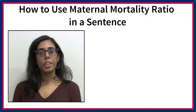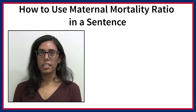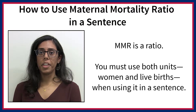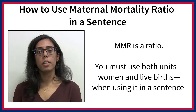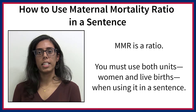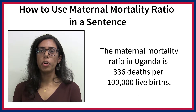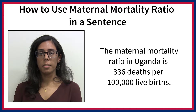How to use the maternal mortality ratio in a sentence: since it is a ratio, you must use both units — women and live births — when using it in a sentence. For example, you can say: the maternal mortality ratio in Uganda is 336 deaths per 100,000 live births.